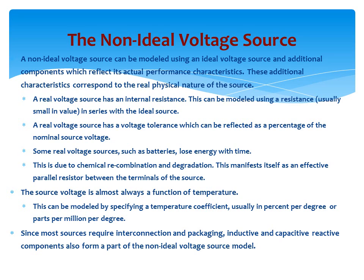A real voltage source has a voltage tolerance which can be reflected as a percentage of the nominal source voltage. Some real voltage sources, such as batteries, lose energy with time due to chemical recombination and degradation. This manifests as an effective parallel resistor between the terminals of the source. The voltage source voltage is also a function of temperature, modeled by a temperature coefficient — usually in percent per degree or parts per million per degree. Since most sources require interconnection and packaging, inductive and capacitive reactive components also form part of the non-ideal voltage source model.